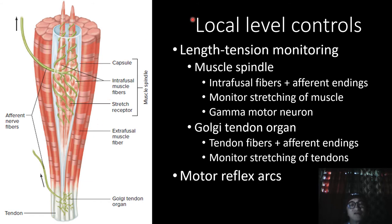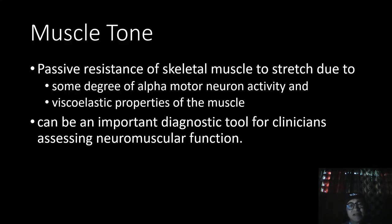In addition to afferent information from length and tension monitoring systems, inputs that trigger reflexes in local motor responses, such as withdrawal reflexes, are integrated at the local motor control level. The whole muscle organ is never fully relaxed at any one time — there is always a slight and uniform resistance when it is stretched by an external force. This resistance is known as muscle tone, which is due both to the passive elastic properties of the muscles and joints, as well as to the degree of ongoing alpha motor neuron activity.